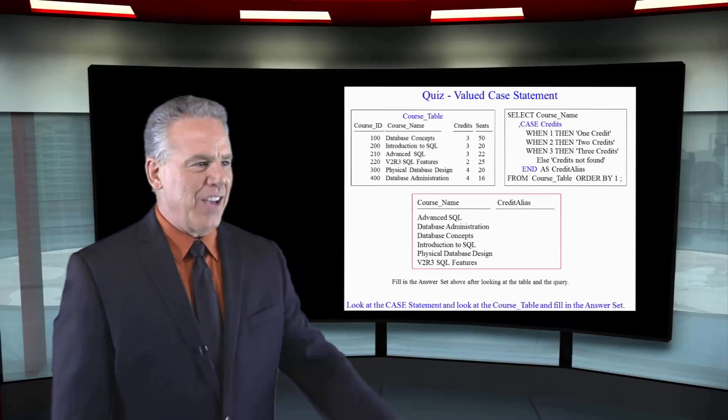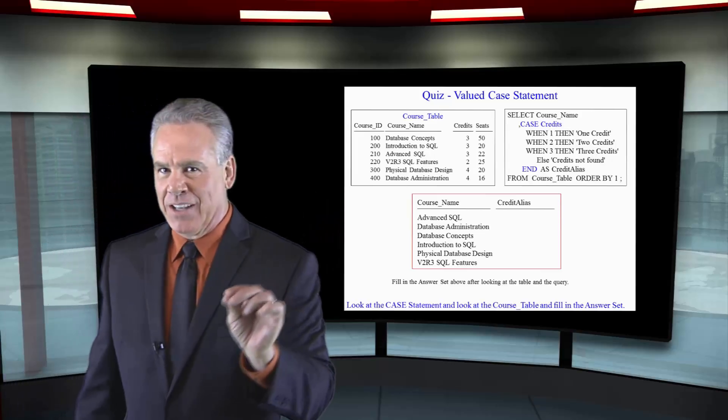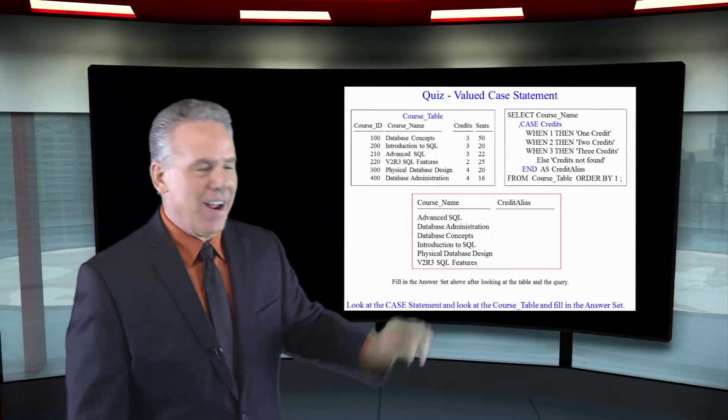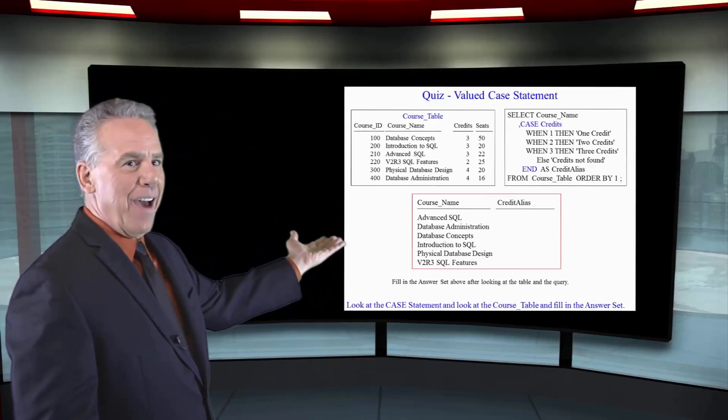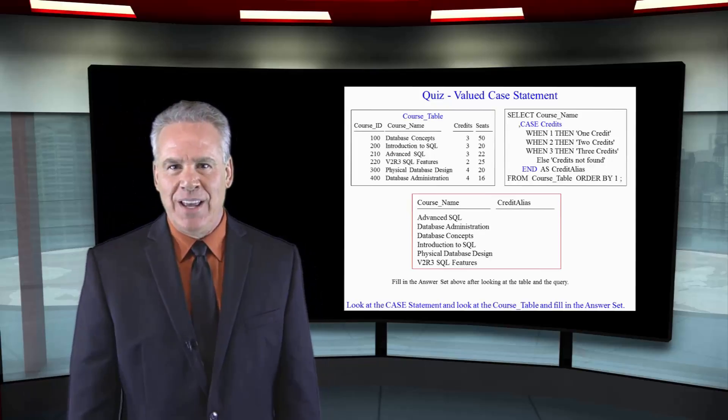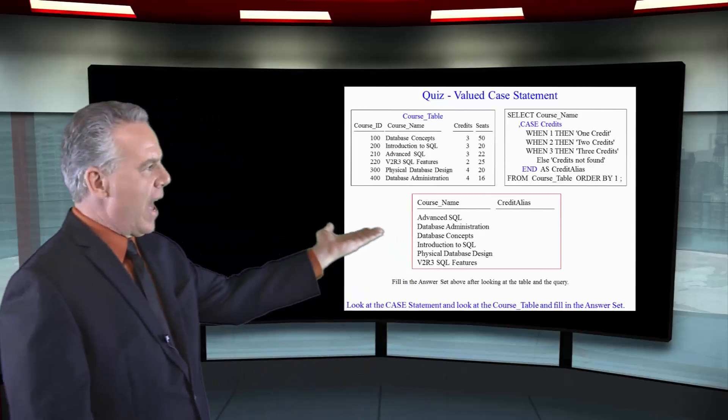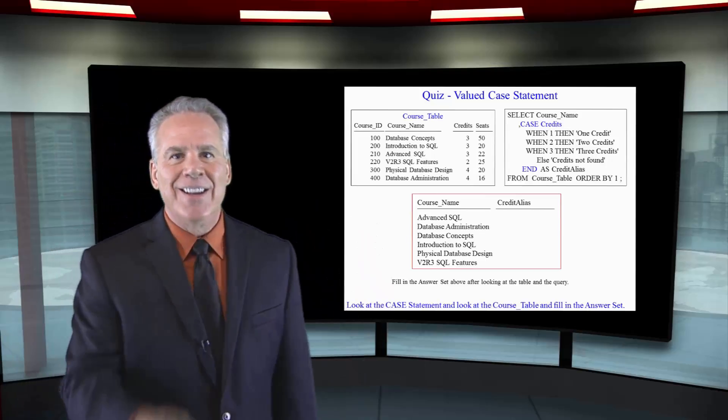Time to test yourself. As you can see, I've got the course table at the top and I've got my SQL right there. I have taken the liberty, because I'm a nice guy, of filling out half of the report. Your mission, if you decide to accept it, is to put in what would happen under the column Credit Alias. You've got 30 seconds. Good luck.